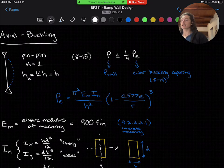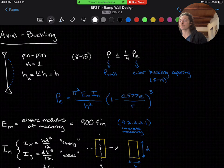Our next check is going to be for the allowable axial force. For this, we're going to check the buckling capacity of the wall as a masonry column.